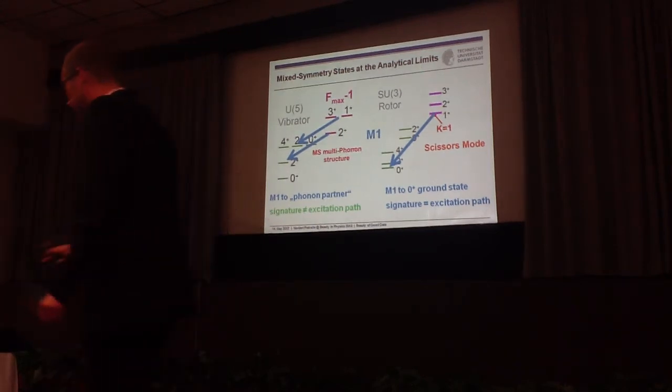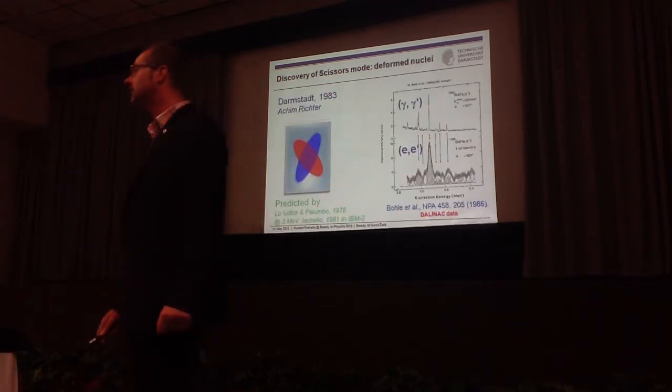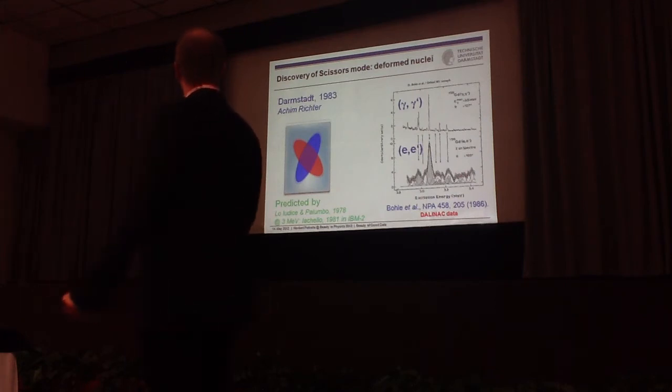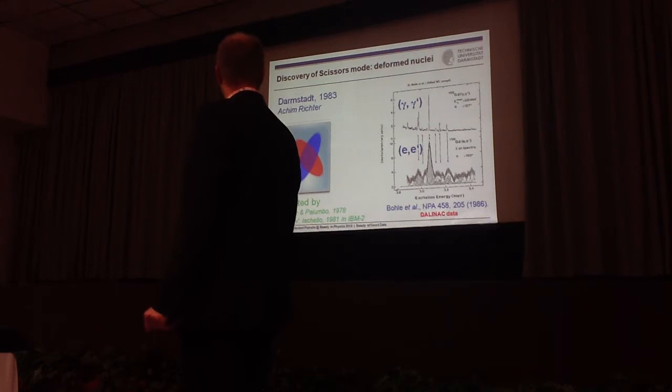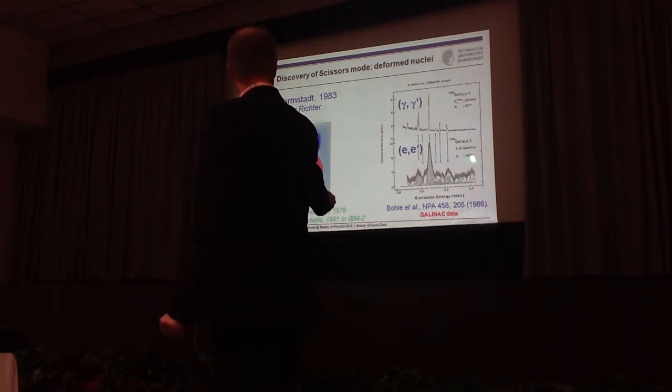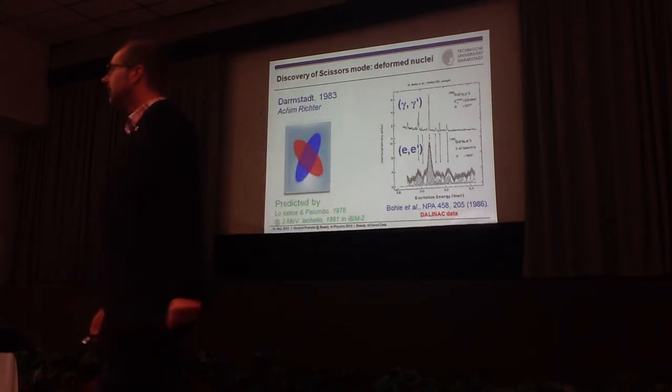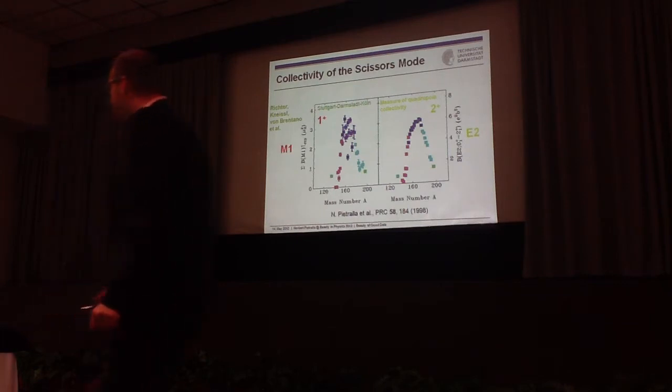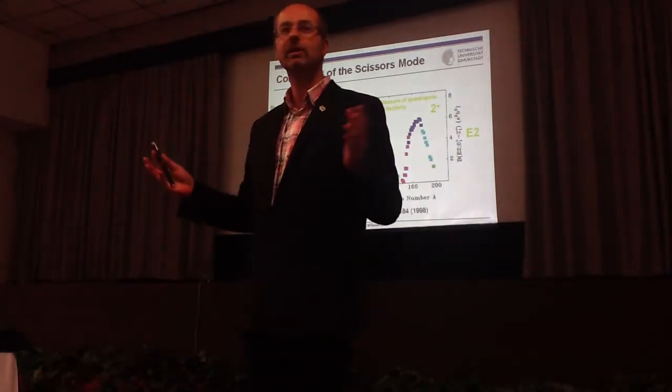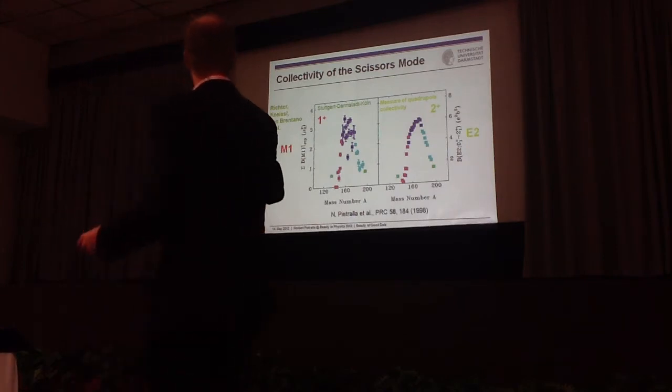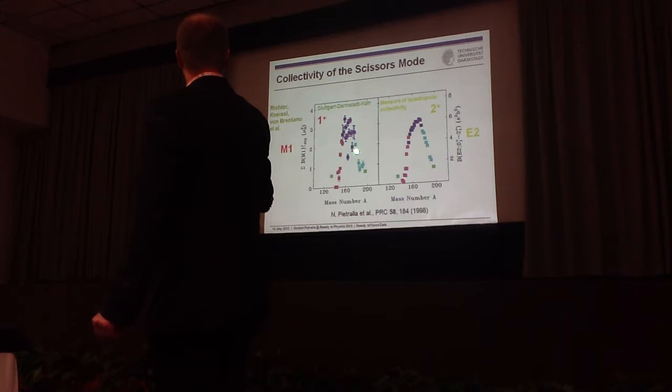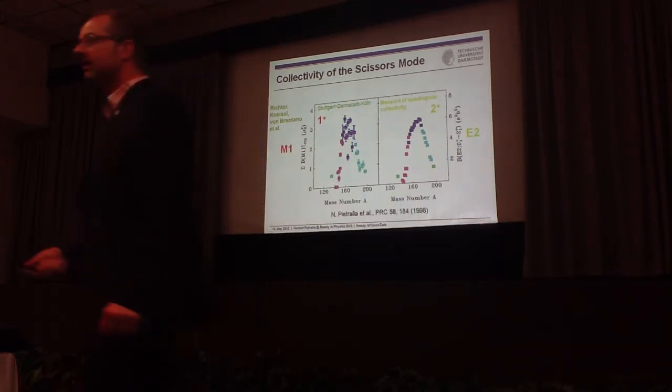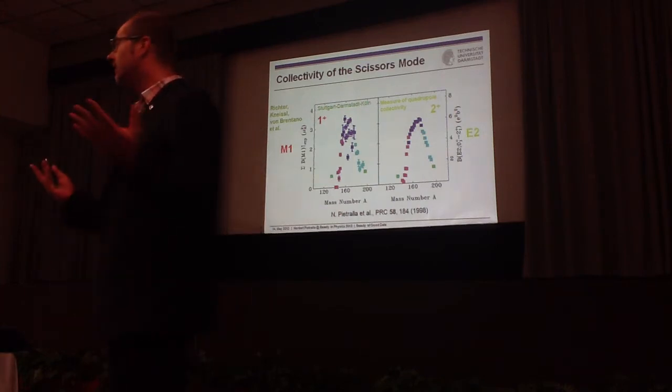Therefore, historically, the scissors mode was the first mixed symmetry state that was discovered, and the discoverer is also sitting in the audience. I think Richter did that piece of work in 1983. He reported the first time, the first publication in 1984. Here is the electron scattering that he has done at the DALINAC in Darmstadt, on samarium-156. And then later on, there were photon scattering experiments done in Darmstadt and in Stuttgart mostly. And then a couple of years later, the discussion about whether or not this is a collective mode was over because the data that had been taken until that time in this Darmstadt collaboration clearly proved the collectivity of this excitation.